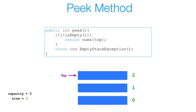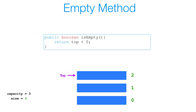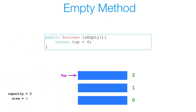Now let's look at the peek method, which we just used. In our peek method, if our stack is empty, we throw a new EmptyStackException just like in the pop method. If our stack is not empty, we simply return the element at the top of the stack — so basically we return the element at index 2. For the isEmpty method, if our top is less than 0 we return true; if our top is greater than or equal to 0, we return false. In this case, the top of the stack is at index 2, so we return false.